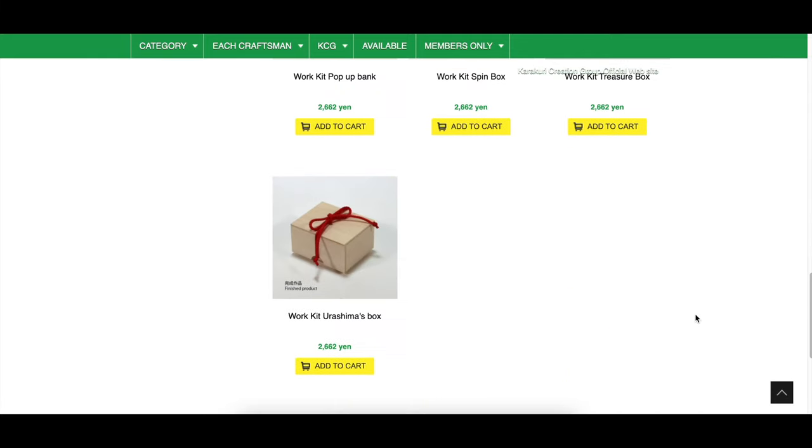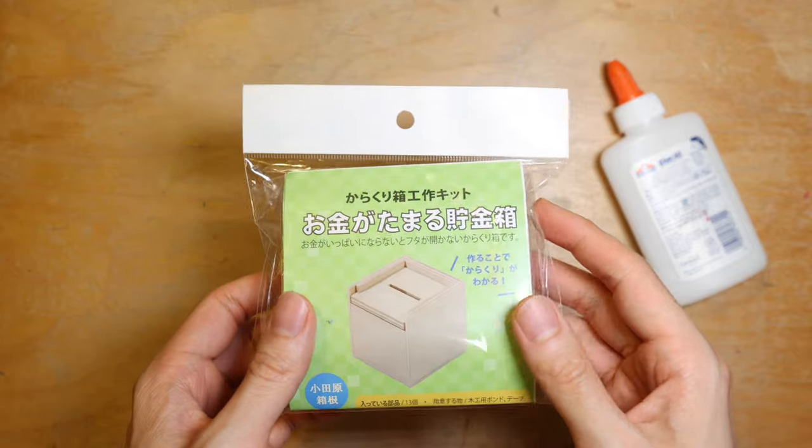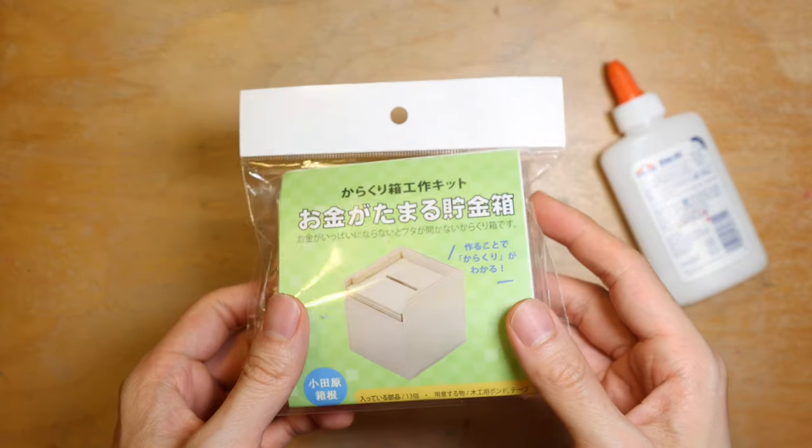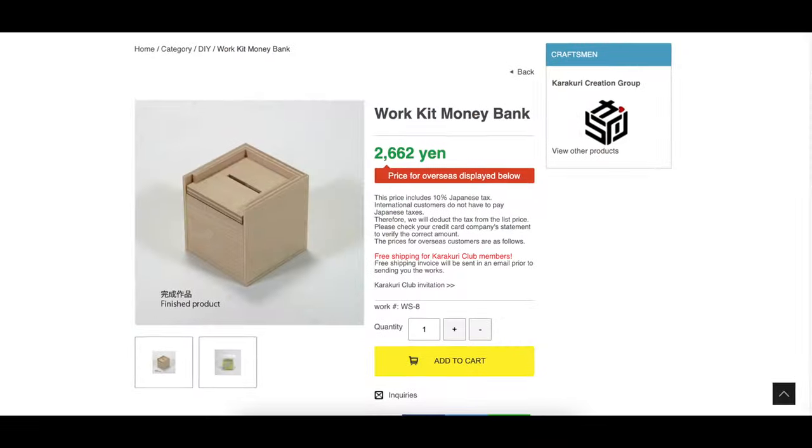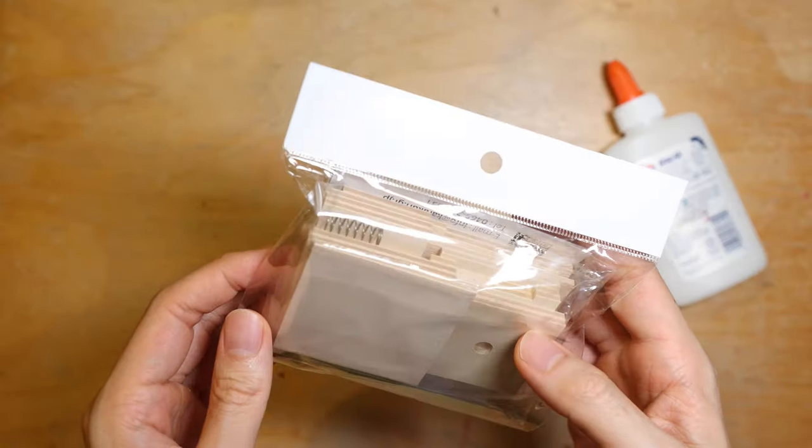Those I have made already and can be found in the playlist linked in the description below. As the name suggests, this box should work as a piggy bank where coins can be placed through the slit. But what is the trick or the mechanism? Let's find out, shall we?